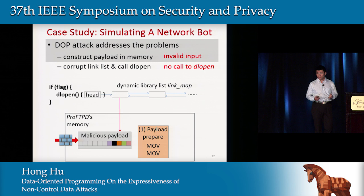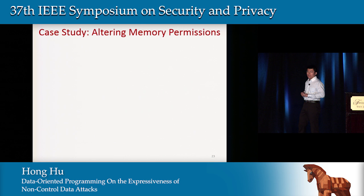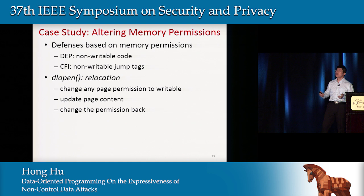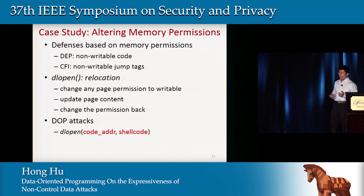This attack is launched with more than 700 requests to the program. The last attack changes memory permissions, which is severe because many defense mechanisms depend on memory permissions — for example, DEP requires non-writable code, and some CFI implementations require read-only jump tables. The existing relocation functionality of DL open can change the permission of any page and patch it, then change it back. Using DOP, we corrupt arguments and global variables used by DL open and force it to write shellcode into the code page, re-enabling code injection for attackers.